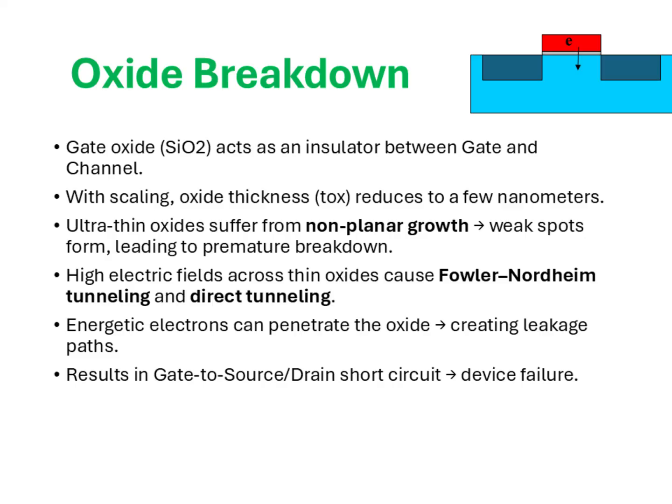As a result, the oxide can suffer from premature dielectric breakdown, which drastically reduces device lifetime. Moreover, when the oxide is extremely thin, very high electric fields develop across it during operation. Under such fields, electrons can tunnel through the insulating barrier through two main mechanisms: Fowler-Nordheim tunneling, which occurs at high fields, and direct tunneling, which dominates when the oxide is extremely thin. Both these tunneling processes contribute to gate leakage currents, increasing static power dissipation. Over time, energetic electrons penetrating the oxide create localized damage and trap states, which further worsen leakage.